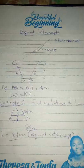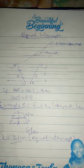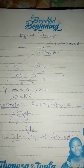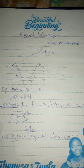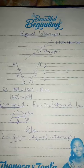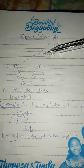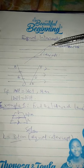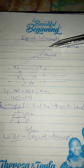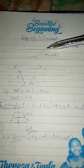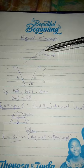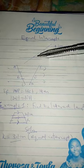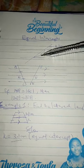In today's class, I will discuss with you equal intercepts. An intercept is a part of a transversal cut off in between two lines. Look at this diagram here. See these two lines? The line running over them is called a transversal. A part on your transversal that is being cut off in between these two lines is what we call your intercept.